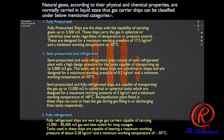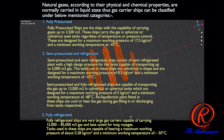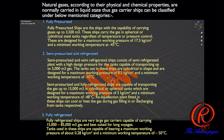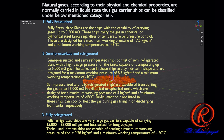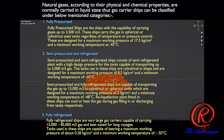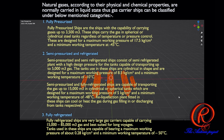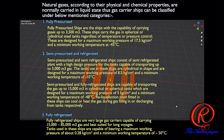Fully Pressurized and Fully Refrigerated ships are very large gas carriers, capable of carrying 15,000 to 85,000 cubic meters of gas, and best suited for long voyages. The tanks used in these ships are capable of bearing a maximum working pressure of about 0.28 kg per square centimeter and a minimum working temperature of minus 50 degrees Celsius.